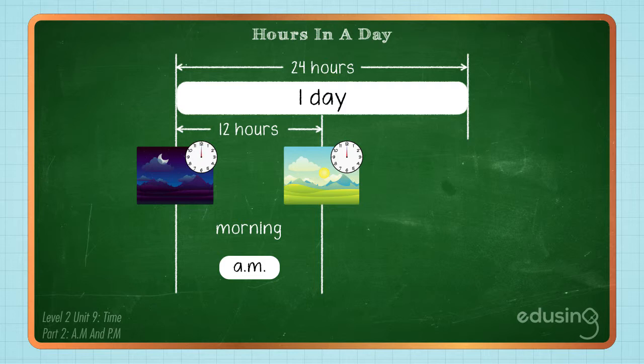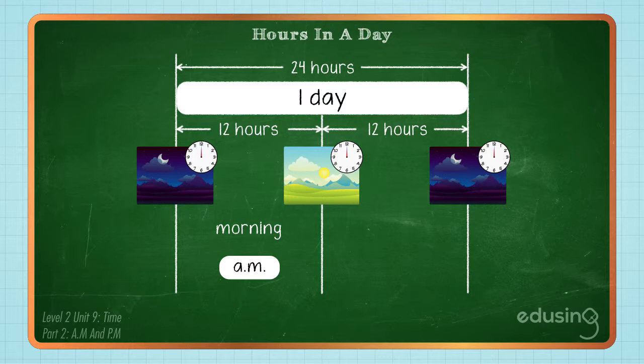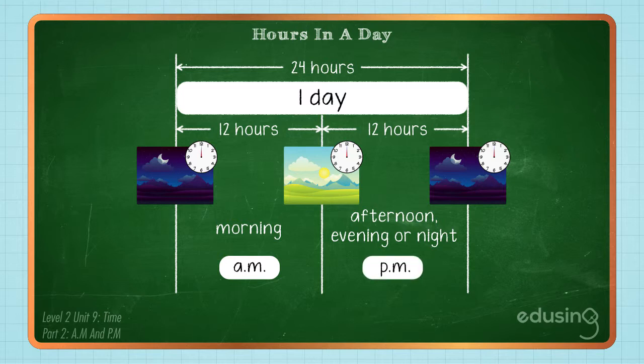The second cycle is from 12 noon to the next 12 midnight. This cycle is commonly described as the afternoon, evening or night. We use PM to indicate the time during this cycle.